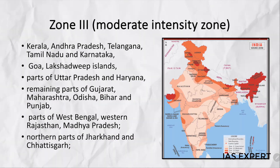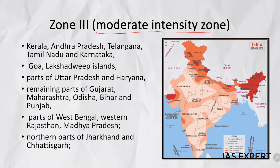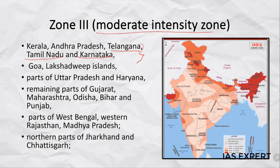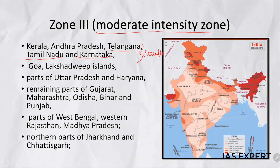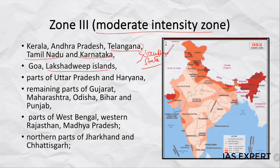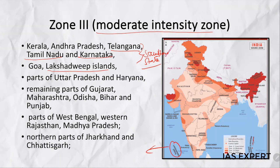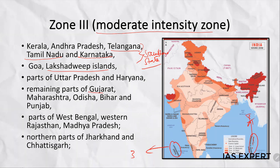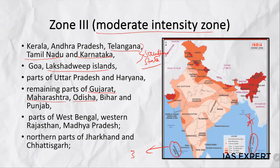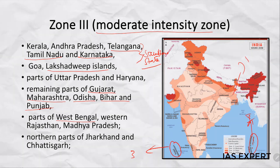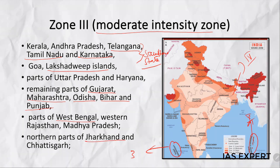Coming to Zone 3 — the moderate intensity zone. This includes the southern states: Kerala, Andhra Pradesh, Telangana, Tamil Nadu, and Karnataka. Goa and Lakshadweep Islands also fall under Zone 3, while Andaman and Nicobar comes under Zone 5. Additionally, remaining parts of Gujarat, Maharashtra, Odisha, Bihar and Punjab, mostly the southern parts of West Bengal (the northern part falls under Zone 4), and the northern part of Jharkhand and Chhattisgarh are in Zone 3.